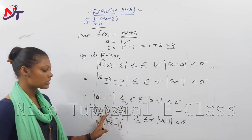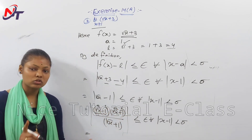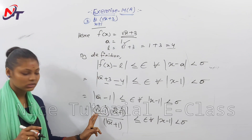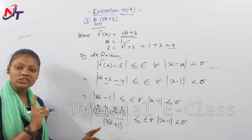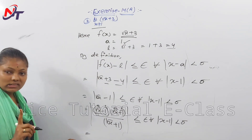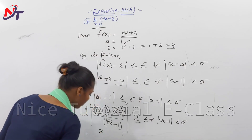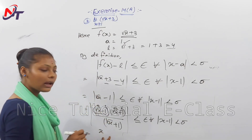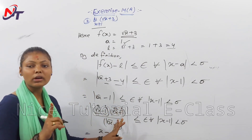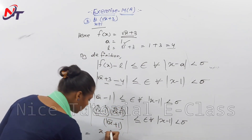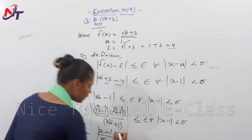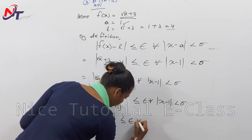Using the identity a minus b times a plus b equals a squared minus b squared: root x minus 1 times root x plus 1 equals root x squared minus 1 squared. Root x squared is just x, and 1 squared is 1, so the numerator becomes x minus 1. Therefore we get: mod of x minus 1 divided by root x plus 1, less than epsilon.